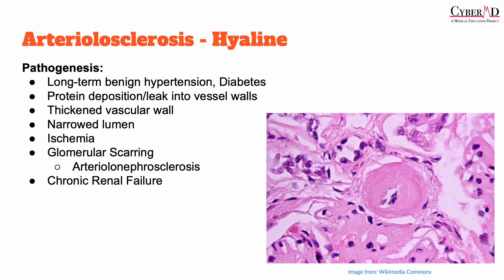Histologically, as seen on screen, this can result in a pink hyaline substance. As the walls thicken, it can result in a number of issues, most of which follow the same disease history of arteriosclerosis in general — reduced vessel caliber leading to end-organ ischemia and damage. The classic example is glomerular scarring, which is known as arteriolonephrosclerosis.